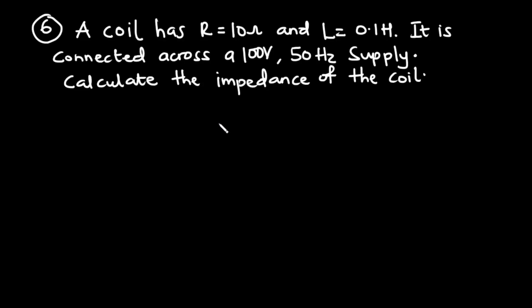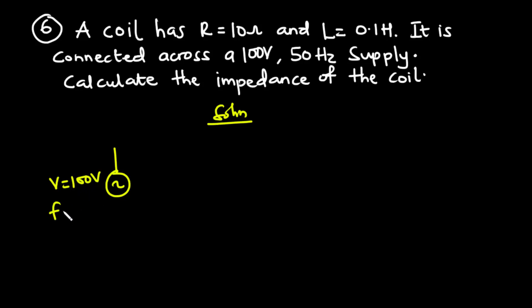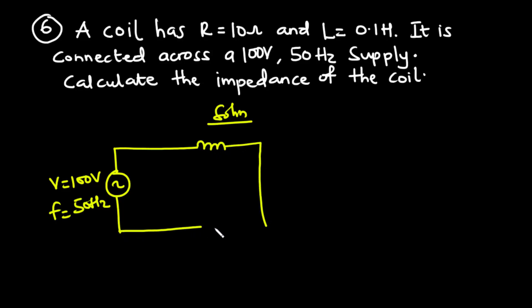We are to calculate the impedance of the coil. Let's represent this in circuit form. We have the voltage V equals 100 volts with frequency 50 hertz connected across the coil, which has resistance 10 ohms and inductance 0.1 henry.